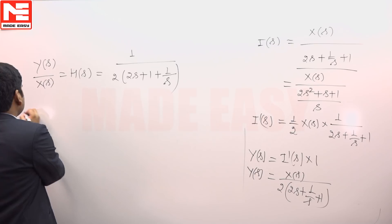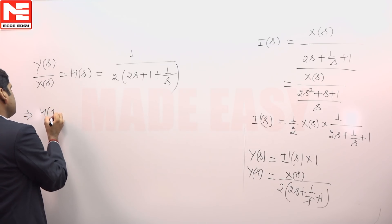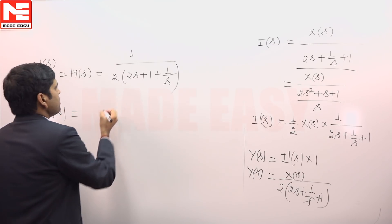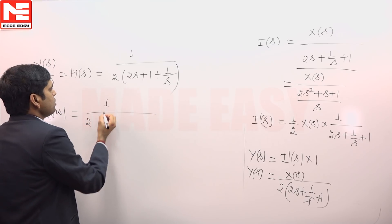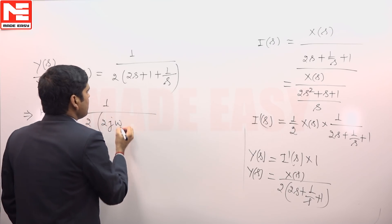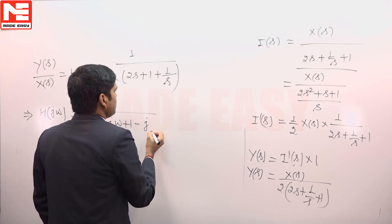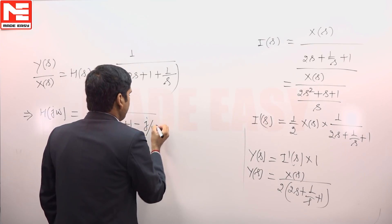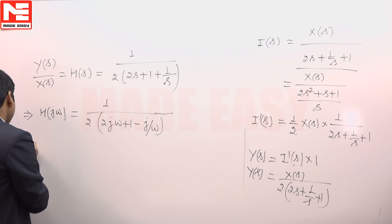If we put s = jω then H(jω) is equal to 1/(2(2jω + 1 - j/ω)).